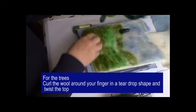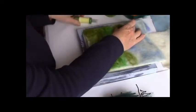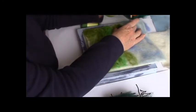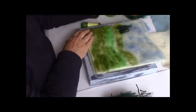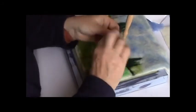Commence putting in the trees in the distance. Curve the green roving around your finger like a teardrop and twist the top so that it looks like a spike. Place it down and secure again with your needle.